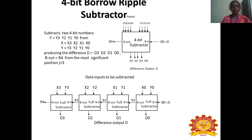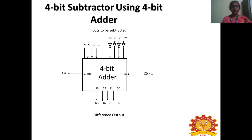For the two's complement method, we invert Y and add 1, so X minus Y becomes addition of X to the two's complement of Y. For the 4-bit borrow ripple subtractor: X0, Y0, and B0 are subtracted to give D0 and B1; B1 feeds the next full subtractor with X1, Y1 to give D1 and B2; then X2, Y2, B2 → D2, B3; and X3, Y3, B3 → D3, B4. For the 4-bit subtractor using an adder, we invert Y and add 1, which is equivalent to two's complement addition.